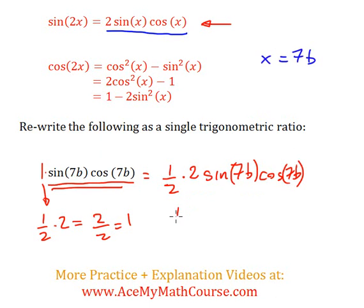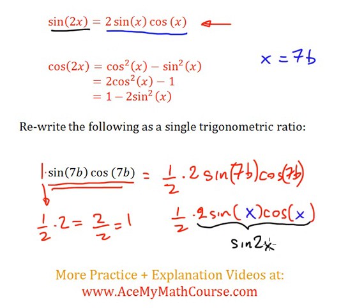So, rewriting, I have half times 2 sine x cos x. And 2 sine x cos x, I already know that's equivalent to sine 2x. So I can just write that instead. And the half comes as well. So it's half times sine 2x.